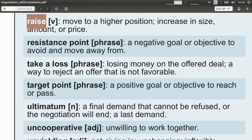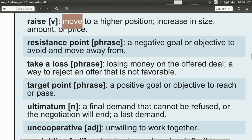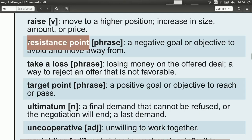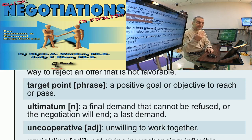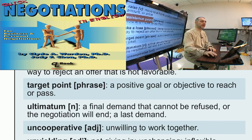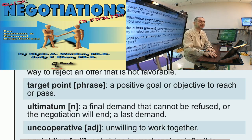Raise, of course, means to make higher — to increase. Here we'll be talking about raising the price, raising the offer, or changing something to be higher. You use this when speaking: I need to raise my price, or I need to raise the requirement. Resistance point is a key idea in this chapter — it's a price, shipping time, quality, or something about the negotiation that you cannot give up. That is your minimum, and if the other side won't give you that, you'll walk away. That's your resistance point.